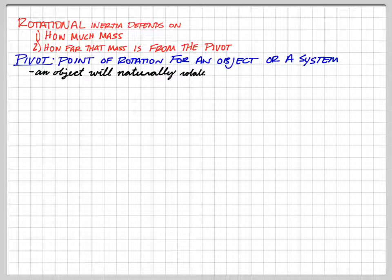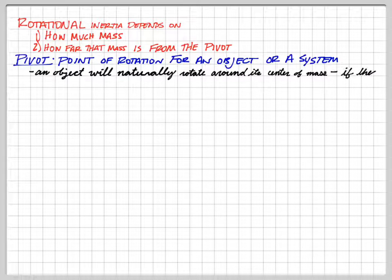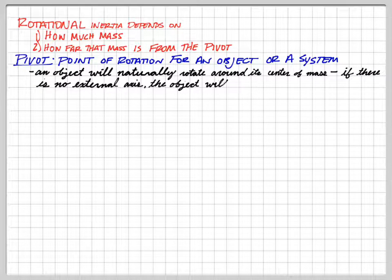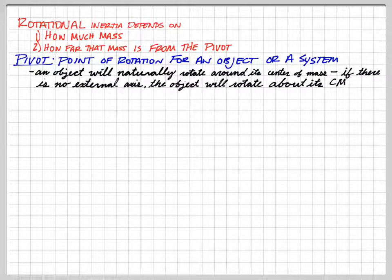Naturally, an object will rotate about its center of mass. If you take your pencil and spin it on a table, with no external pivot or axis, the object will naturally rotate about its center of mass. You spin your pencil on the table and the part that doesn't look like it's moving much is the center of mass — that's the center of rotation. If you roll a ball across the surface, the center of rotation is the center of mass of the ball.